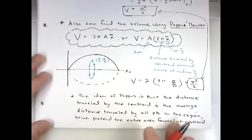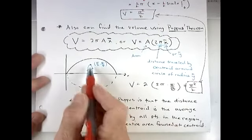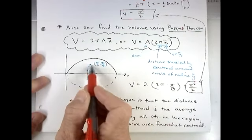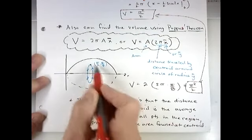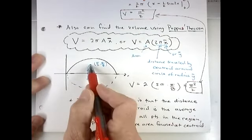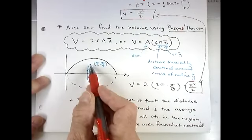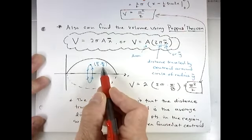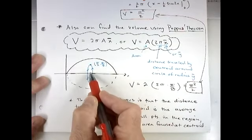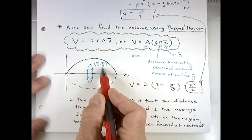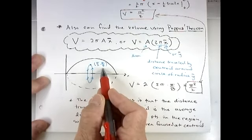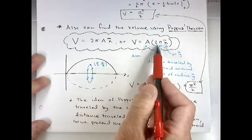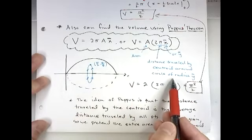And so what Pappus realized is we could get the solid by thinking of all the area condensed right at the centroid. And as we rotate the sine arc graph around the x-axis, you could pretend all of that area is sweeping out a circle where the radius is, in this case, ȳ. The radius would be pi over eight.